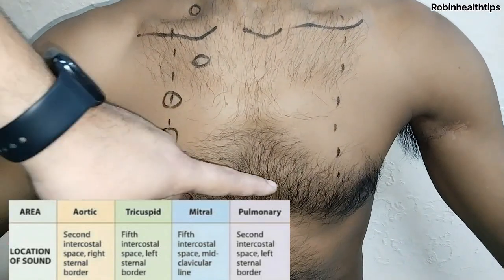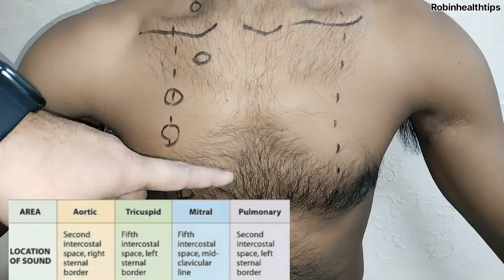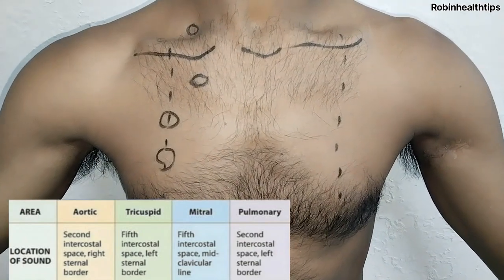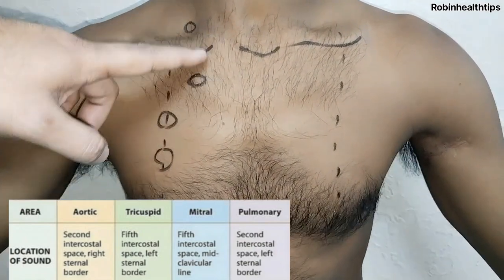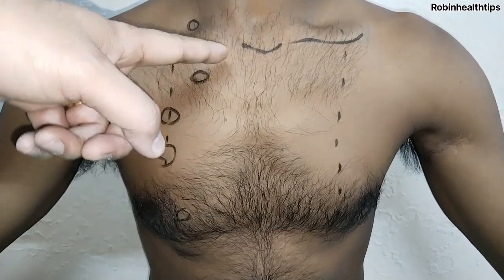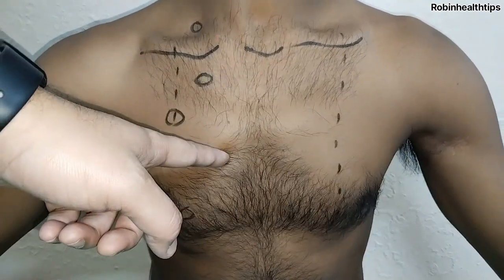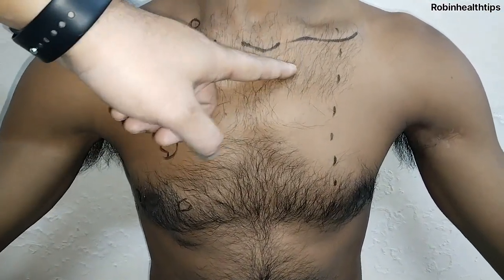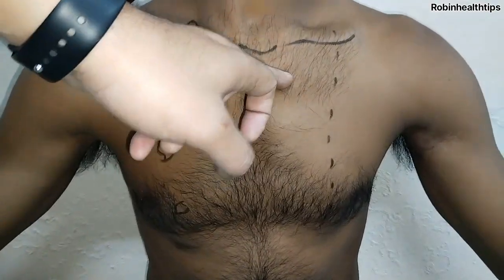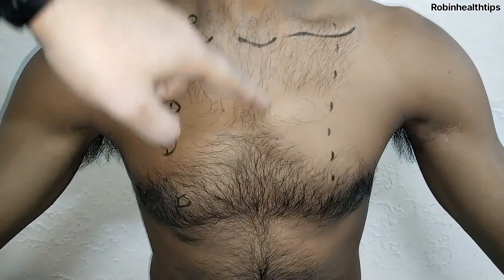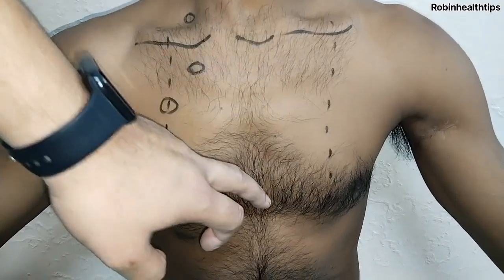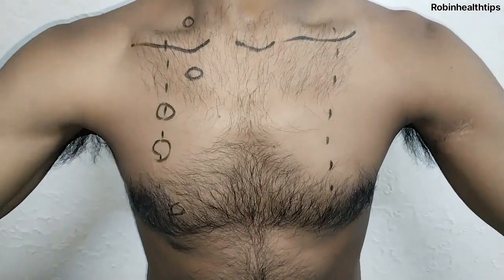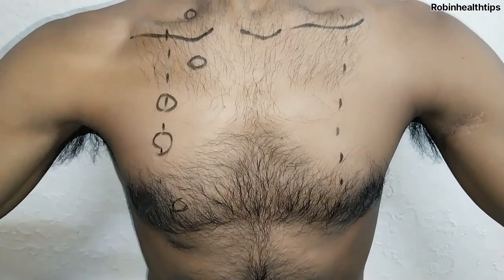Then move medial to the mid-clavicular line on the left side to auscultate the mitral area of the heart. Move to the right side at the fifth intercostal space near the sternal border for the tricuspid area. Then at the second intercostal space on the right side near the sternal border for the aortic area, and on the left side second intercostal space near the sternal border for the pulmonary component of the heart sound.